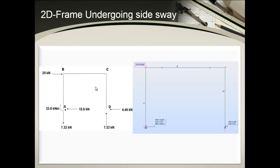Now let's compare results from the Robot Structural Analysis program with our hand calculations. The results are almost identical. Note that the sign convention in Robot Structural Analysis is: upward is positive, rightward is positive, and clockwise moment is positive. So a negative value is shown here because the moment is anti-clockwise.